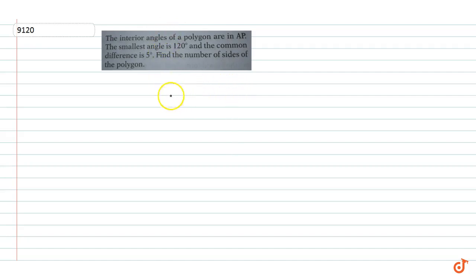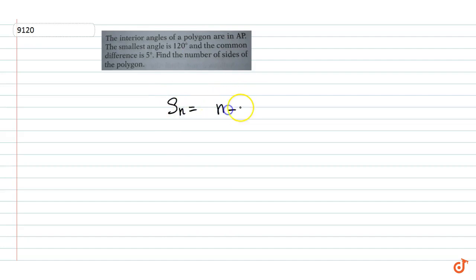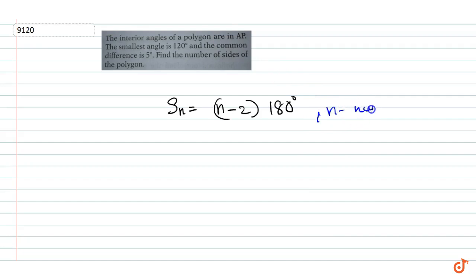Here we have the sum of the interior angles of an n-sided polygon: Sn is equal to (n-2) into 180 degrees, where n is the number of sides.